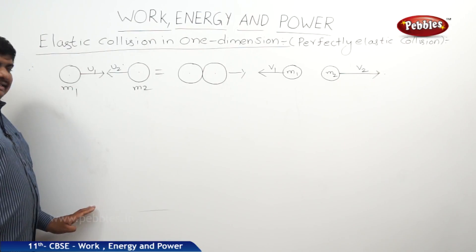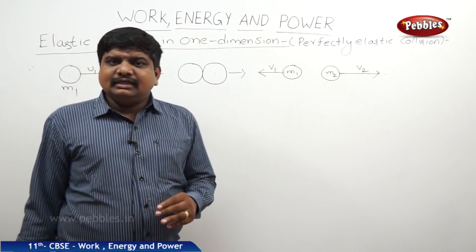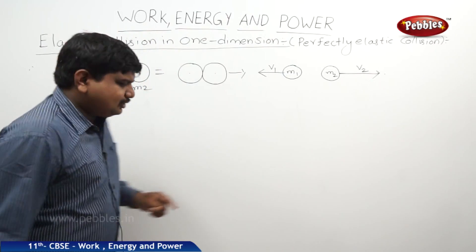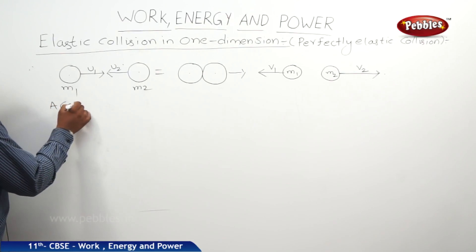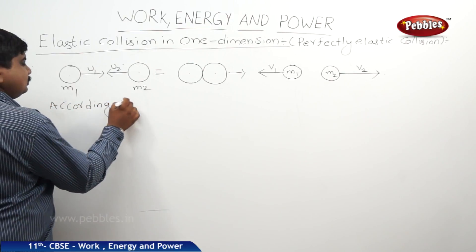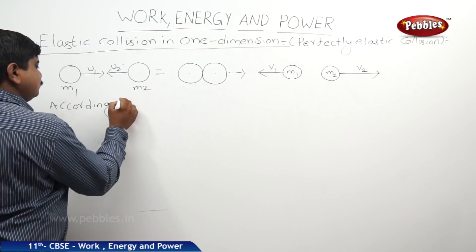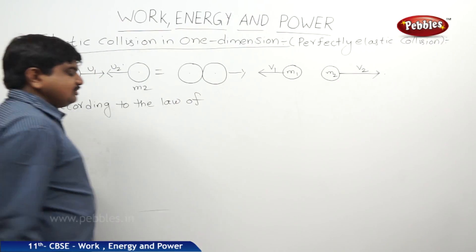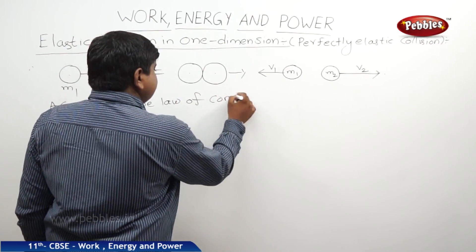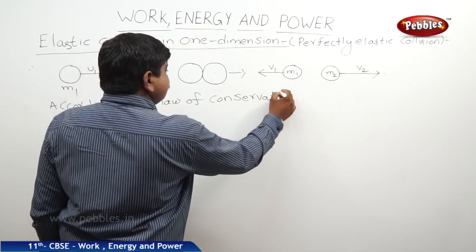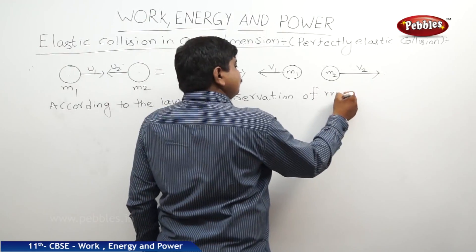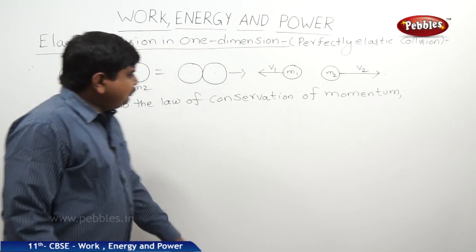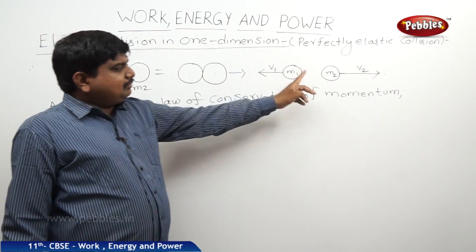What we can understand from this is that in elastic collisions, kinetic energy will be conserved as well as momentum will be conserved. According to the law of conservation of momentum, net momentum before collision is equal to net momentum after collision.